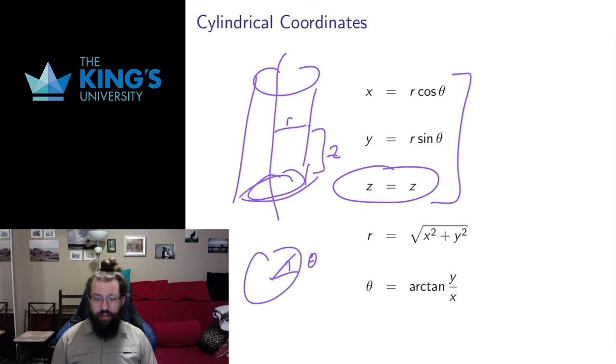This tells us, as I just said, the Cartesian z is the same thing as the cylindrical z. If we do need to go backwards, these are the transformations for R and theta. Z, of course, is still the same thing.